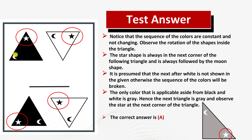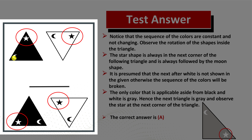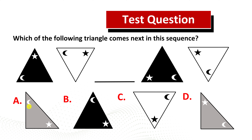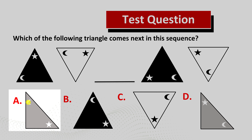Now let's jump to the solution. The key is the pattern of smaller shapes inside the triangle. The star moves to the next corner in each subsequent triangle — from the first to the second, from the second to the fourth, and from the fourth to the fifth. So we need to find the triangle with the star in the bottom right corner. Choices A and B both match this, so the pattern of colors helps us decide. If we imagine a larger pattern of black, white, gray repeating, choice A adds a gray triangle, making it the correct answer.